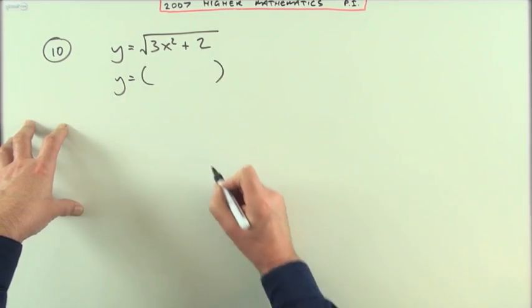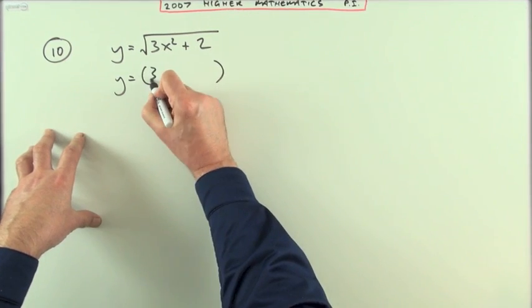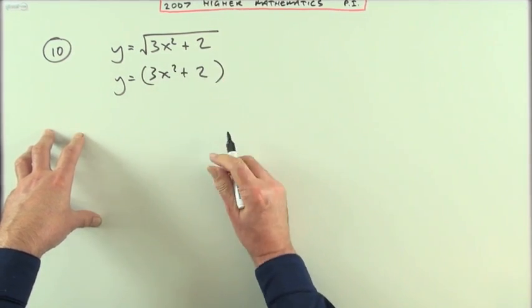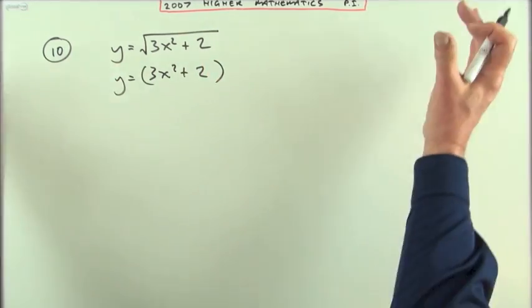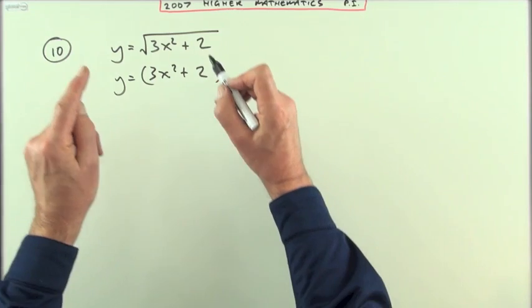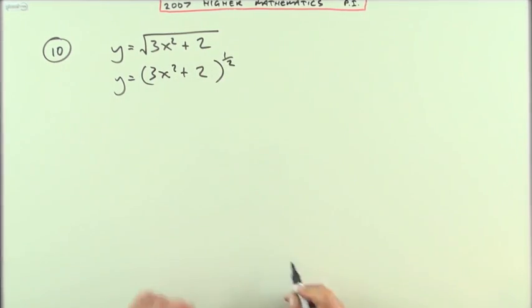I'll just rewrite that in a more explicit way, which would be this. I've got 3x squared plus 2, which is the inner function, and outside happening to that is the square root, which I'll write in index form.